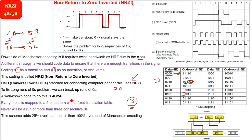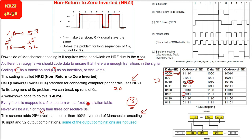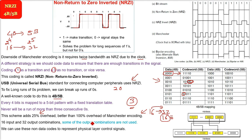But this 4B5B scheme has a 25% overhead because of the transition table. However, it is much better than Manchester encoding, which has 100% overhead.